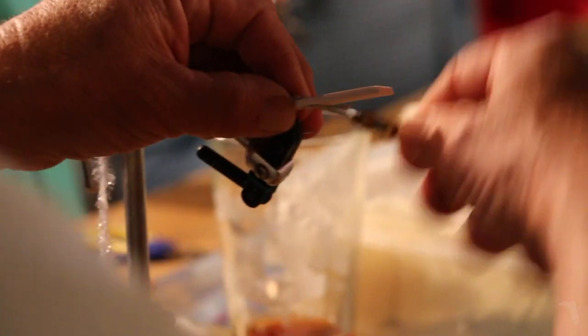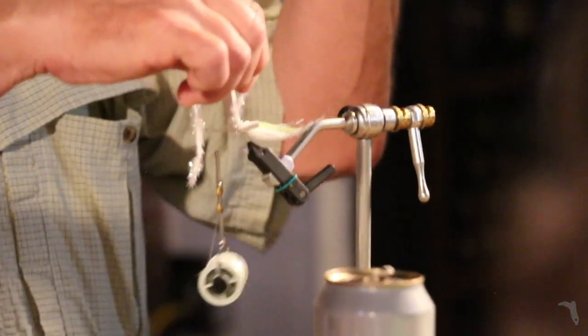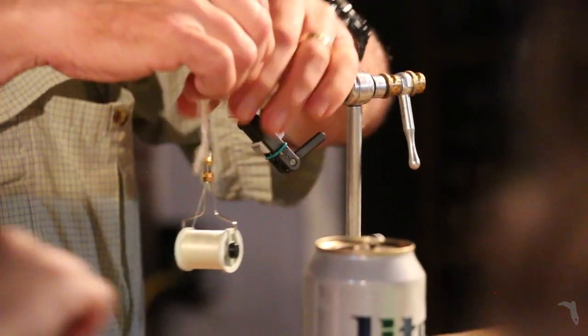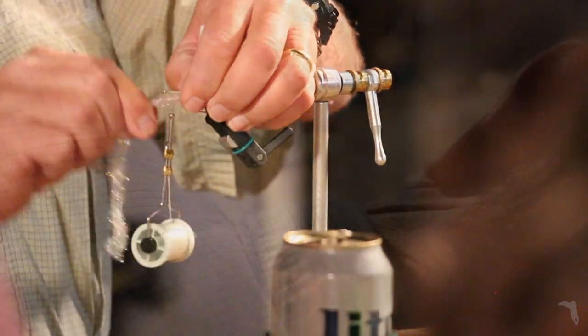Once you wrap to the eye of the hook, then you palmer your chenille all the way up to the eye of the hook. Tie that off. Clear it so it's not over the eye of your hook. It's not in your way.